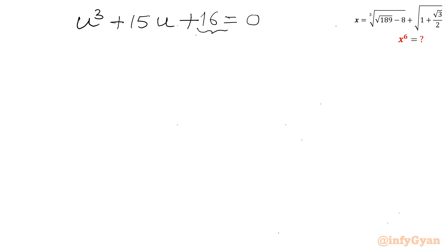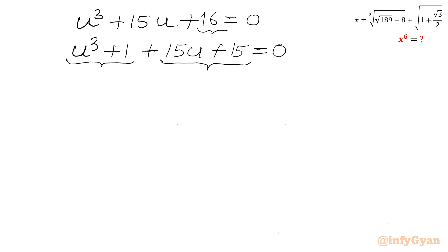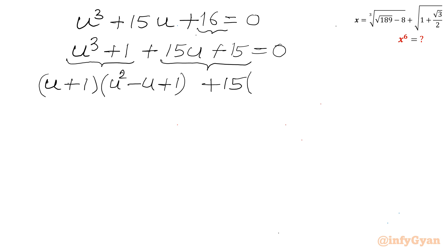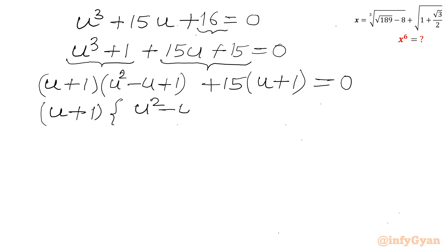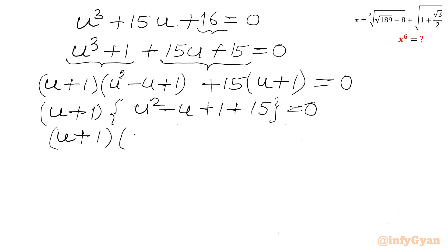This is a cubic equation we will solve by factorization. I will split 16 as 1 plus 15, so: u cubed plus 1 plus 15u plus 15 equals 0. Applying the a cubed plus b cubed formula on the first part and factoring 15 from the second: (u plus 1)(u squared minus u plus 1) plus 15(u plus 1) equals 0. Taking (u plus 1) as common: (u plus 1)(u squared minus u plus 16) equals 0.